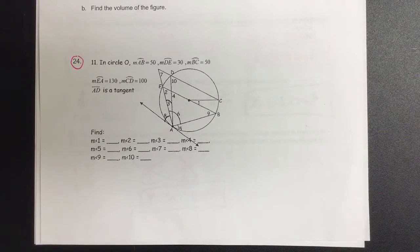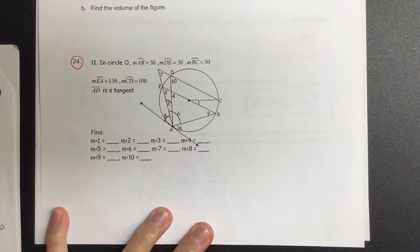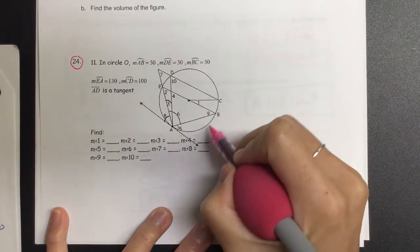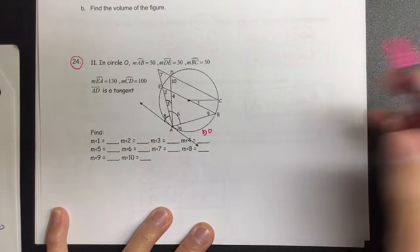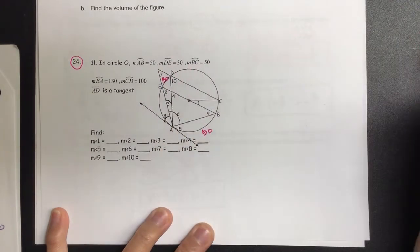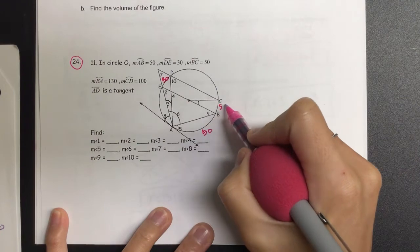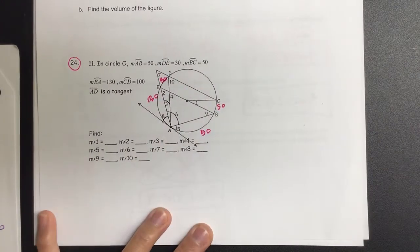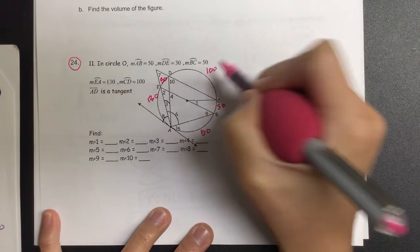So looking at angle 1, or actually let's look at the condition. Hannah, go ahead and read. In circle O, measurement of arc AB is 50, and measurement of arc DE is 30, and measurement of BC is 50. Measurement of EA is 130, measurement of CD is 100, and AD is the tangent. So we know arc AB over here is 50, so let's label that. DE is 30. Then I know BC is 50. Notice our figure not drawn to scale, and that's okay. EA is 130. And then I know CD is 100.